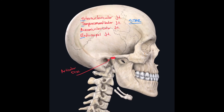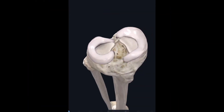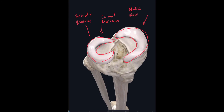Articular discs are round in shape — they actually look like a disc. But there's another joint component that acts as a cushion to reduce friction between two bones, and it's not shaped like a disc. These are called menisci. In the knee joint, you have two crescent-shaped cartilages — a lateral meniscus and a medial meniscus. Their purpose and function is very similar to articular discs, but the difference is their shape.